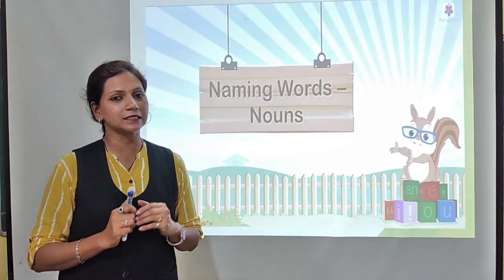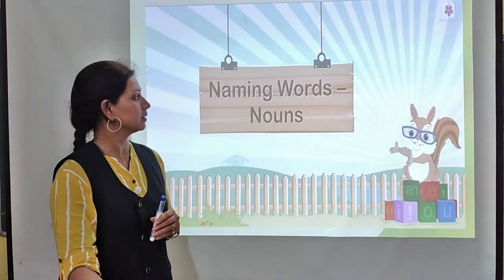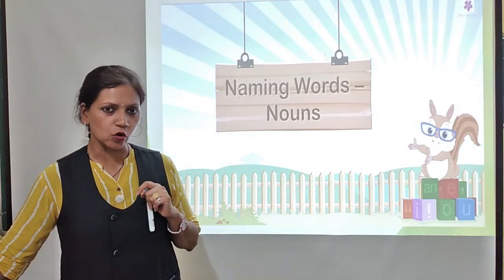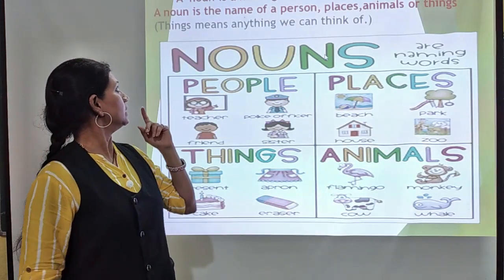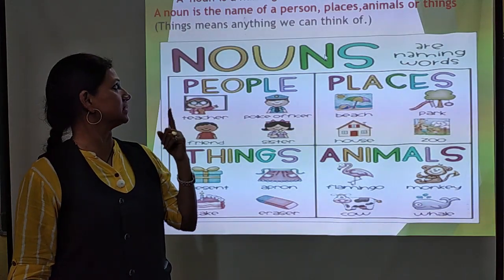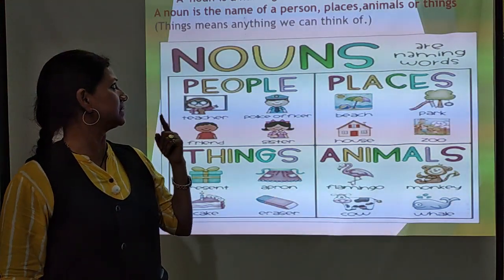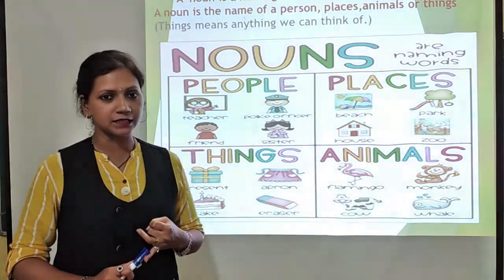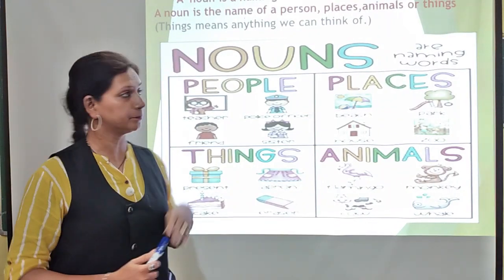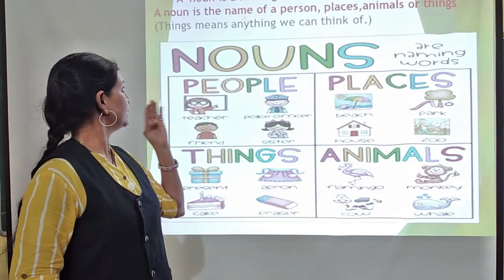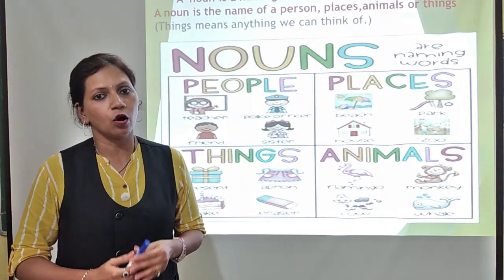So let's see what a noun is. Naming words are also called a noun. A noun is a naming word. A noun is the name of a person, place, animal, or thing. Things means anything we can think of.